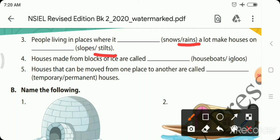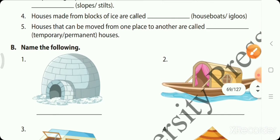Houses made of blocks of ice are called igloos. Houses that can be moved from one place to another are called temporary houses. And fixed houses are called permanent houses, like our houses.